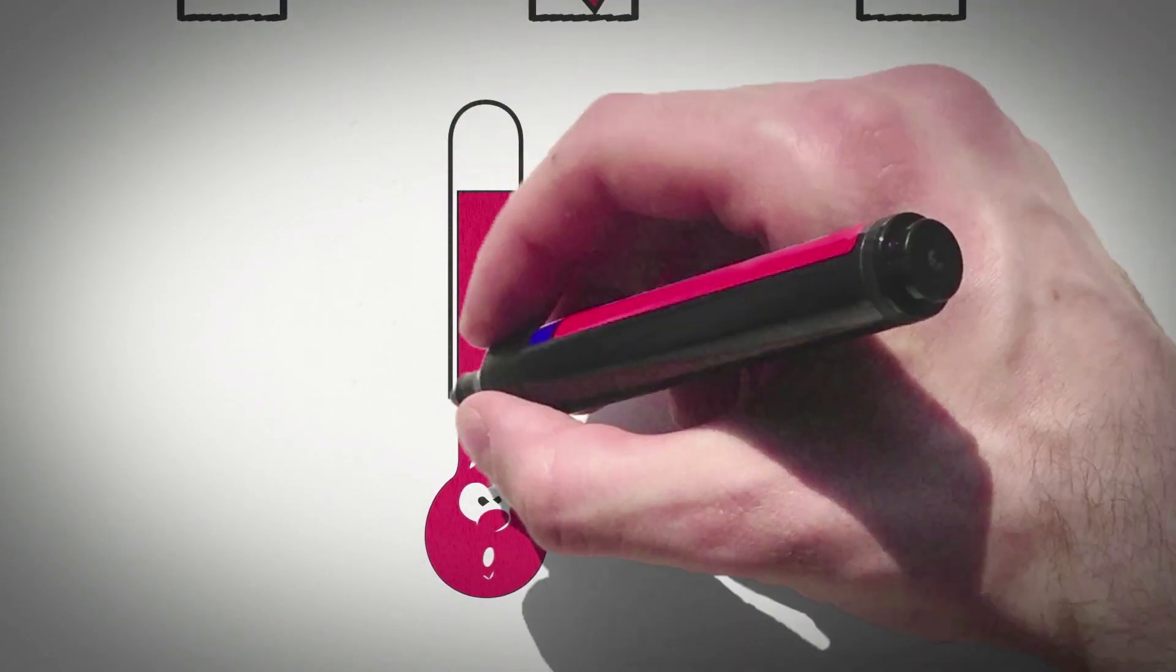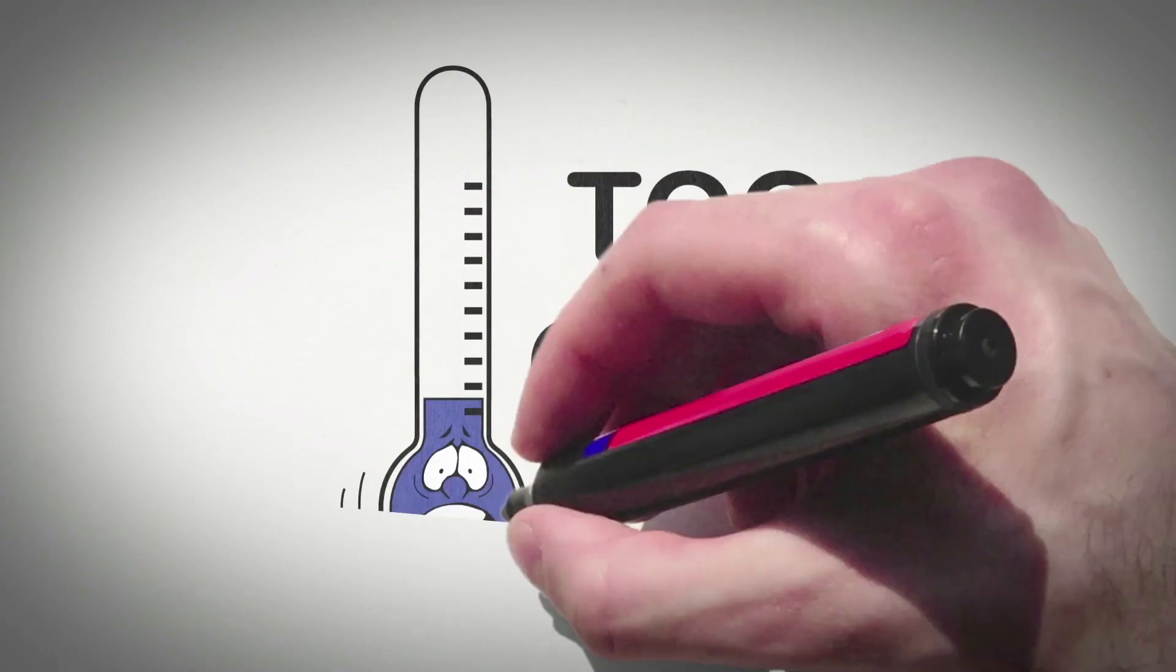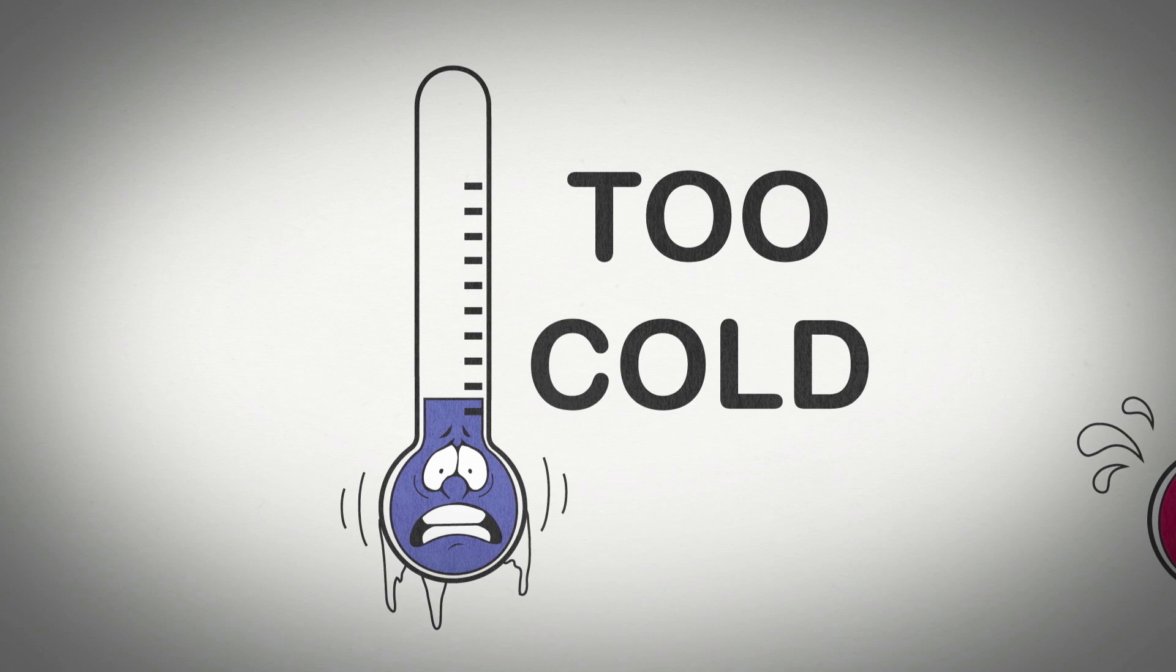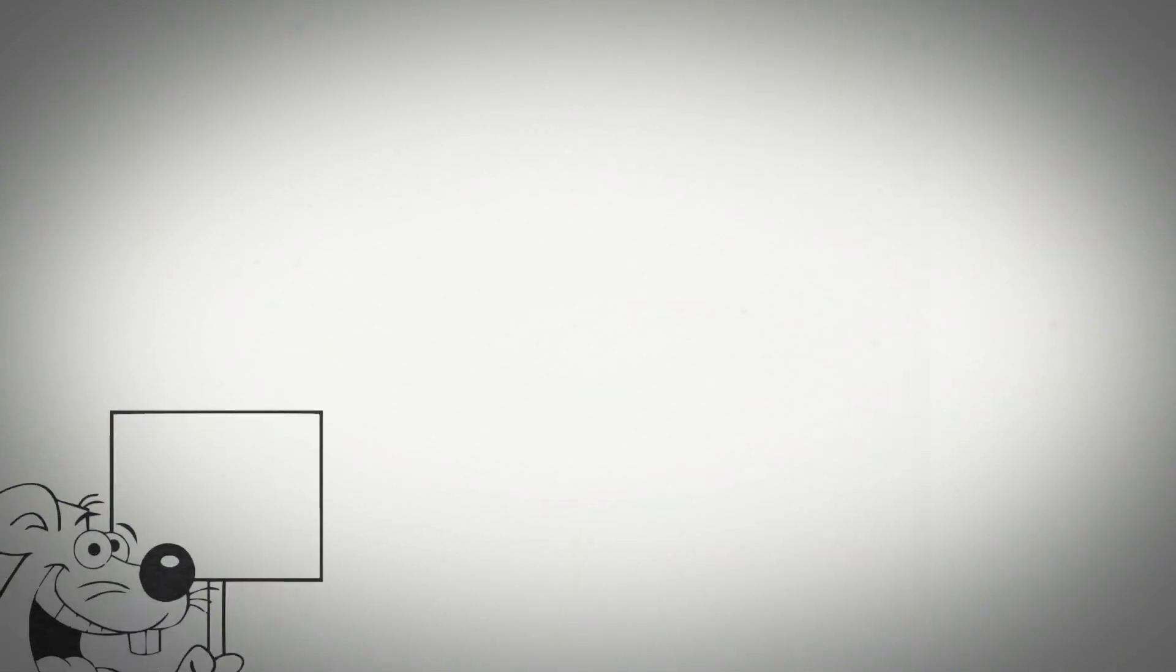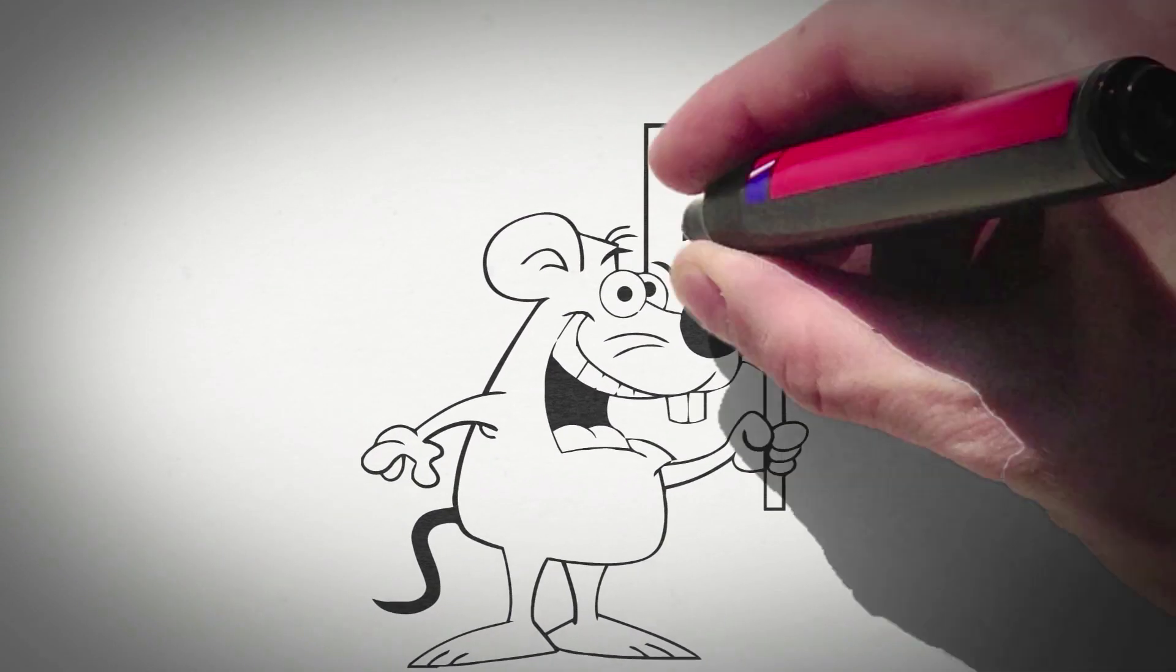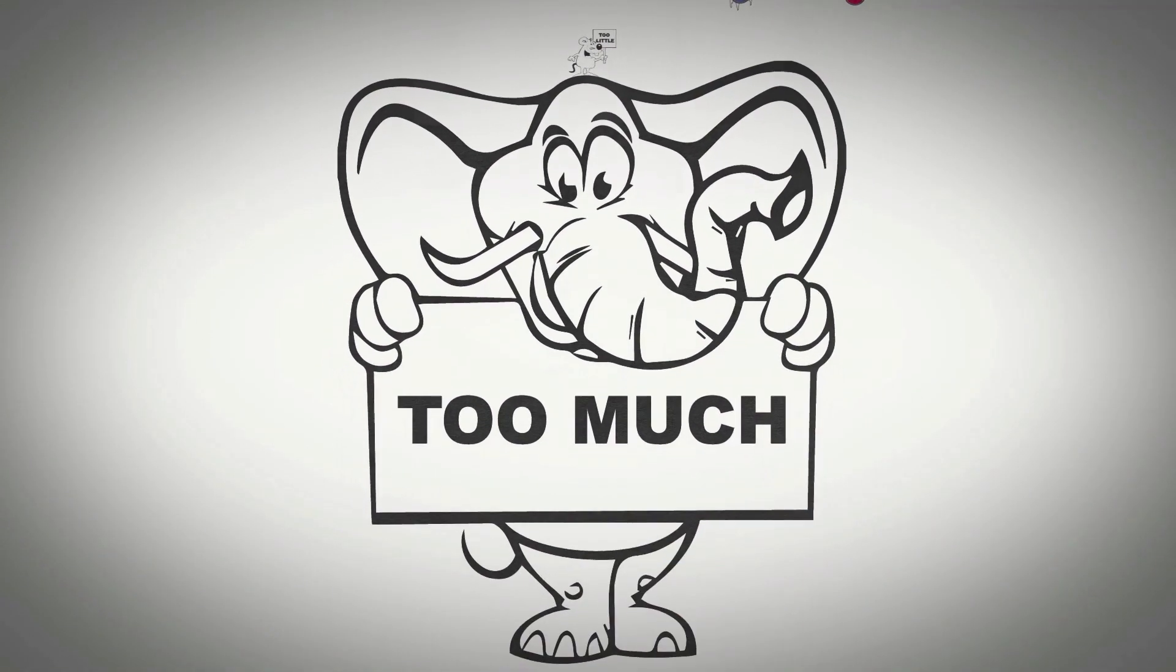Too hot and the adhesive takes too long to set. Too cold and the adhesive will cool more quickly, perhaps before the bond has been made properly. Too much adhesive prevents the bond cooling down before coming out of compression, allowing it to come apart.